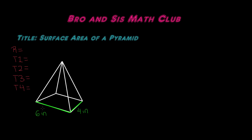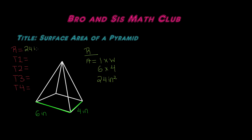Once we find the area of each of these, we will write the area down so we can add them together to find the surface area. First, let's find the area of the rectangle, which is our base. We are given the dimensions of six inches for the length and four inches for the width. The formula for the area of a rectangle is length times width. Six times four is 24 inches squared.